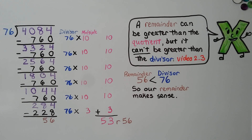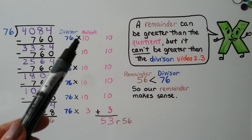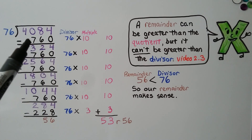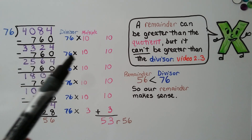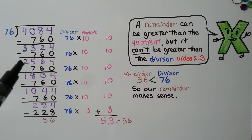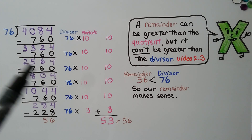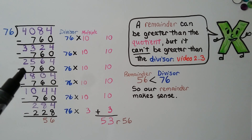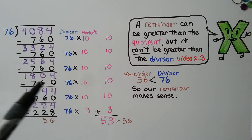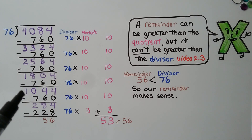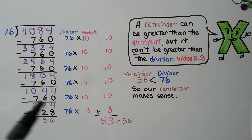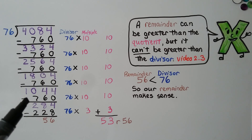Here we have 4,084 divided by 76. We do 76 times 10, which is 760, and subtract it from the dividend to get 3,324. We subtract another 760 to get 2,564, then another to get 1,804, then another to get 1,044, then another to get 284.